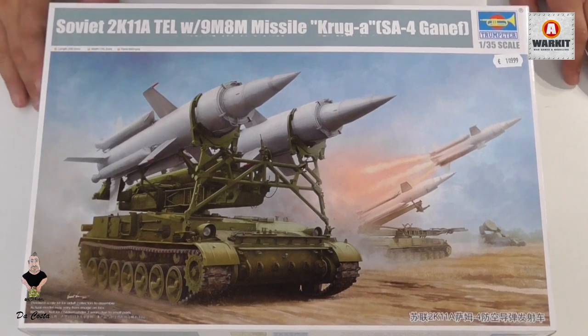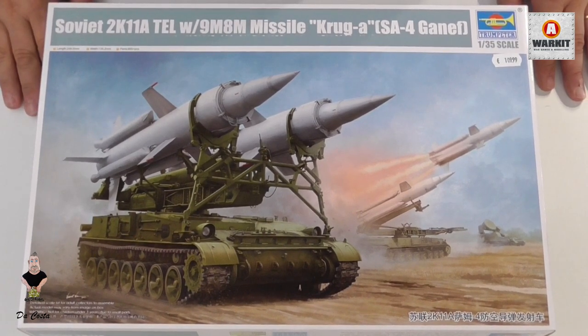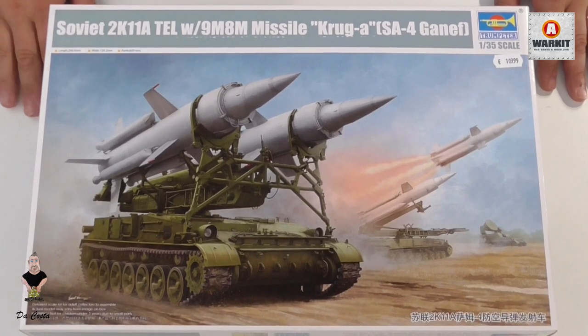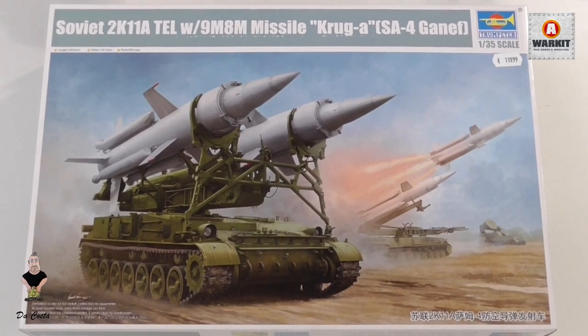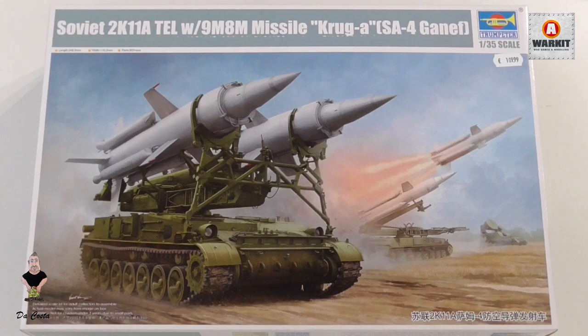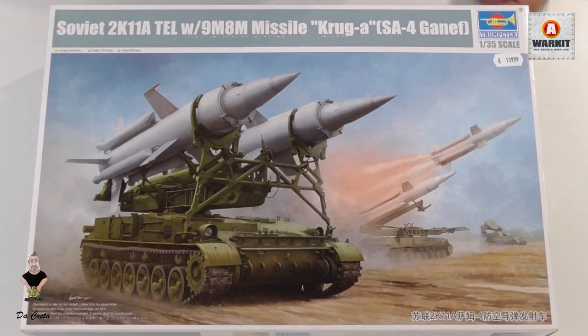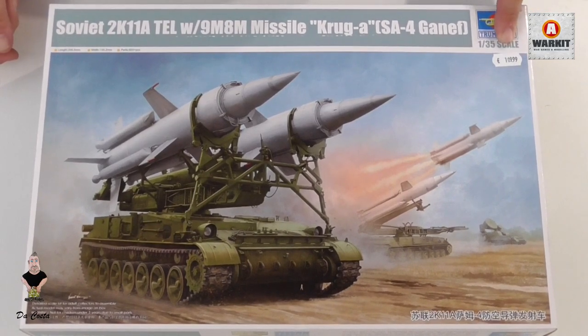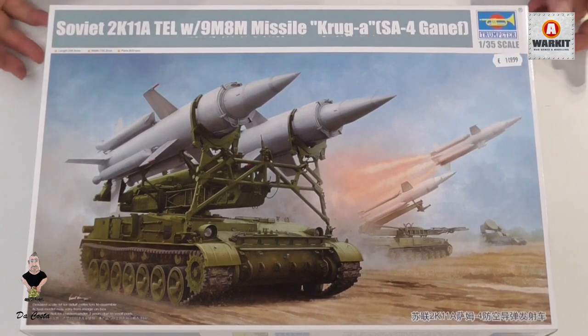Hello everyone, you can see this is a very big box. This is the Soviet 2K11A TELW 9M-AM Missile Krug-A, the SA-4 Ganef, from Trumpeter in 1:35 scale. This is one of the new models from Trumpeter. The price is $190.99.